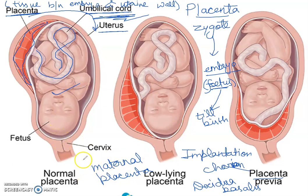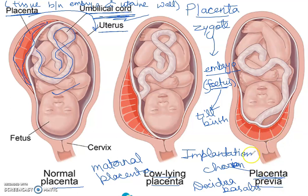In this picture, three types of placenta you can see. This is normal placenta, this is low-lying placenta, and this is placenta previa. These are the different conditions which are responsible for the birth of the baby.